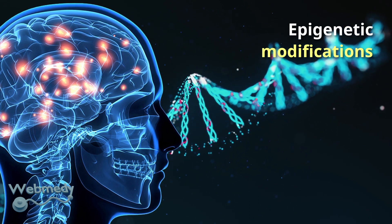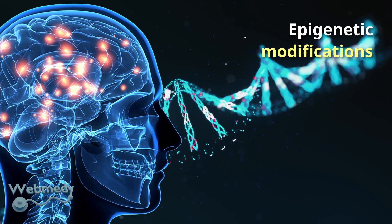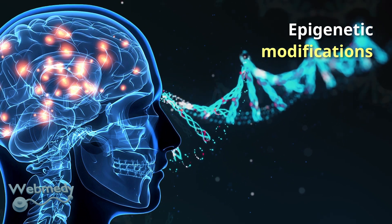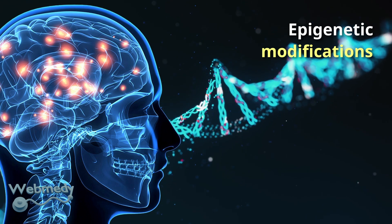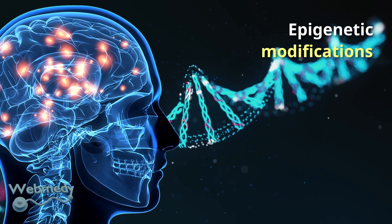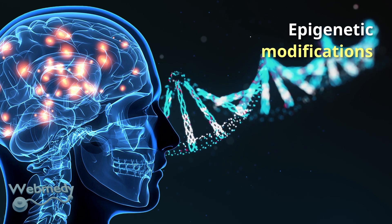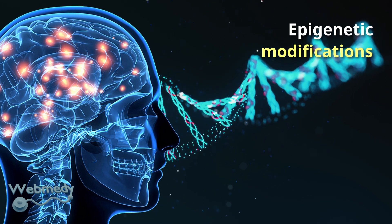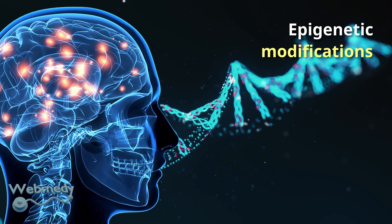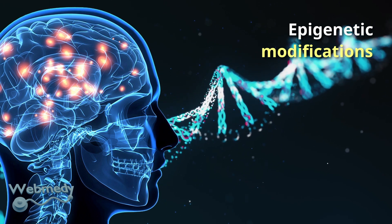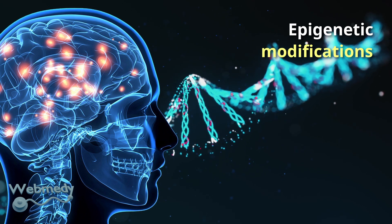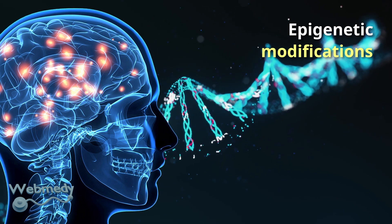Studies have shown that DNMT activity can be affected by a variety of factors related to brain function, including stress, learning and memory, and drugs or other environmental stimuli. For example, stress has been shown to increase DNMT activity in certain brain regions, leading to changes in gene expression that may contribute to anxiety or depression.